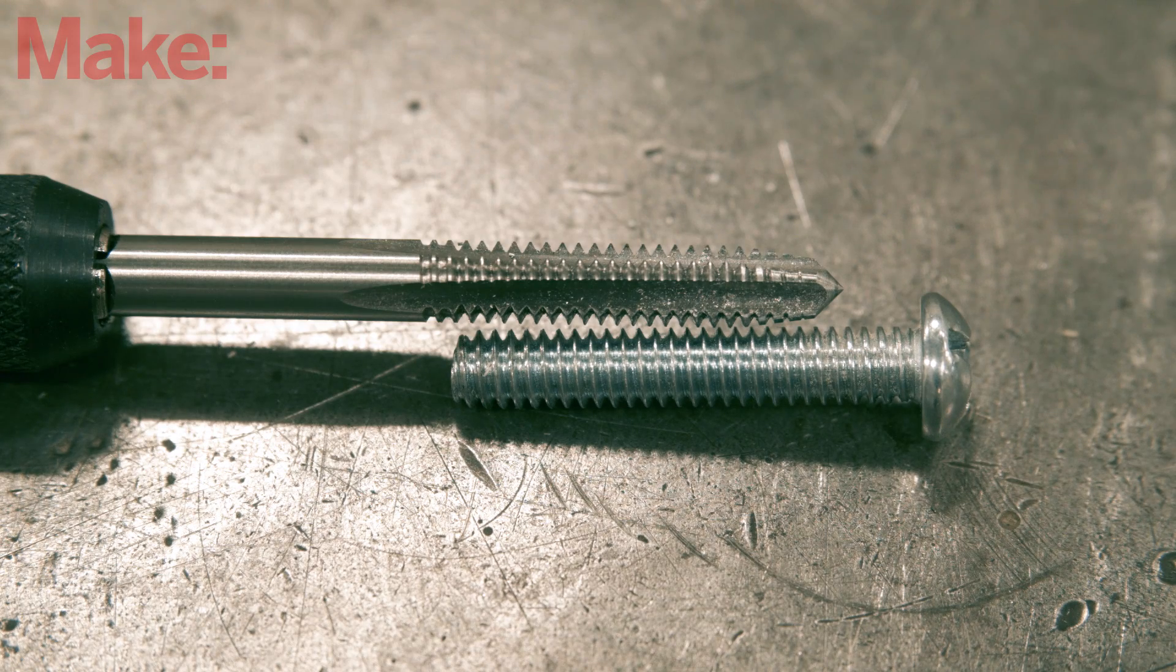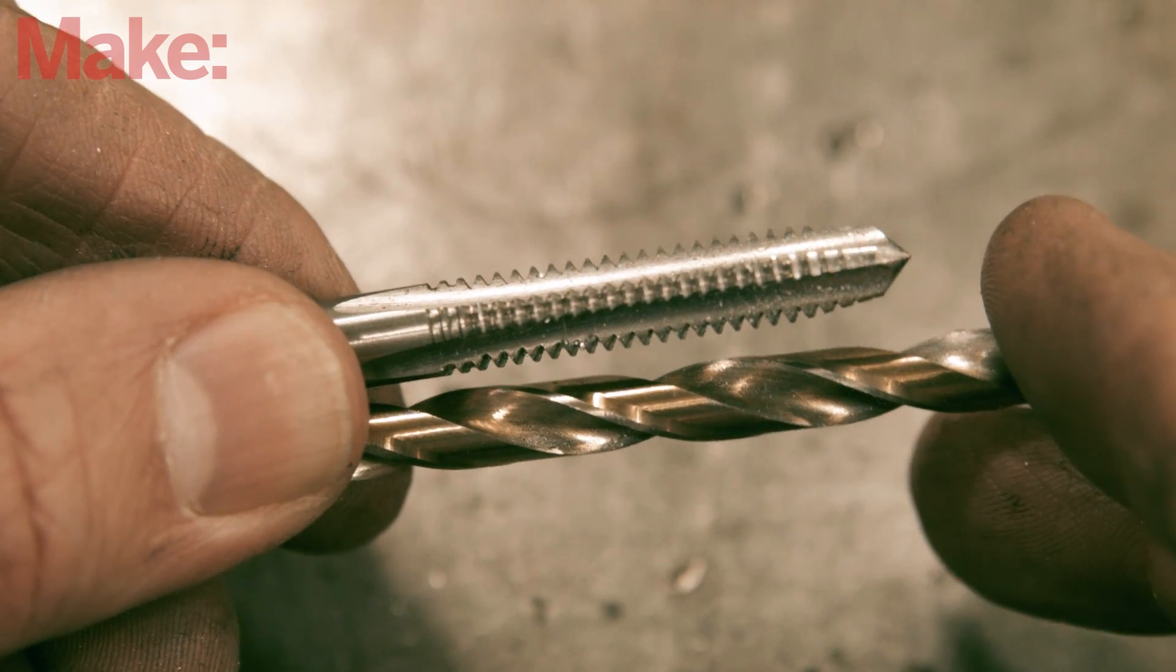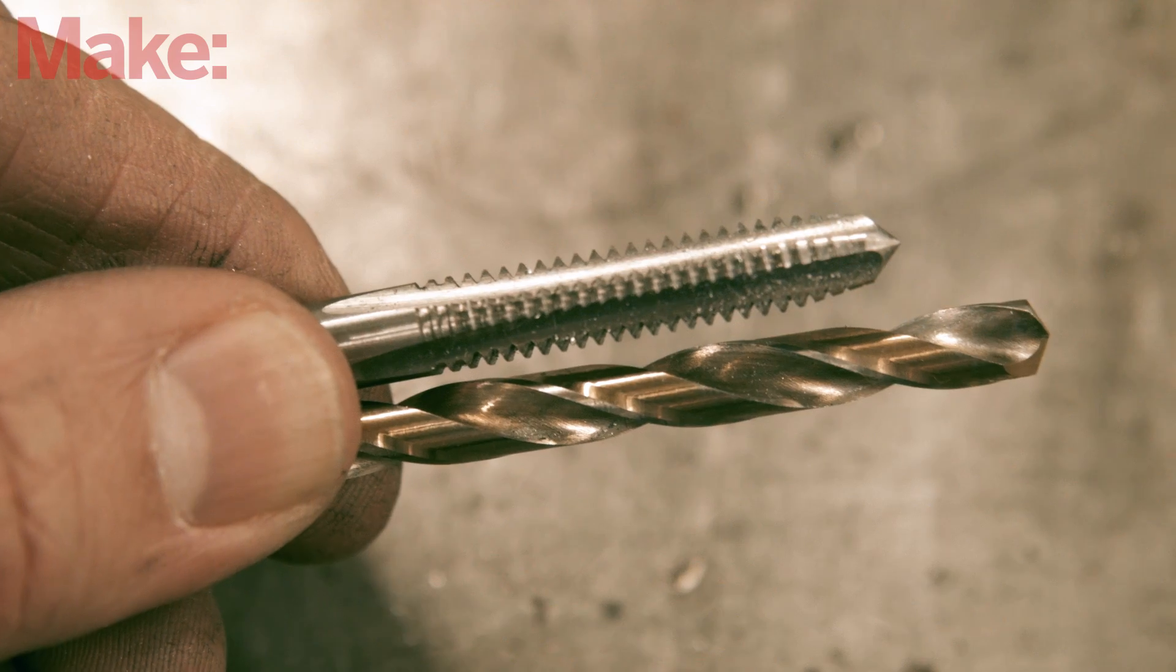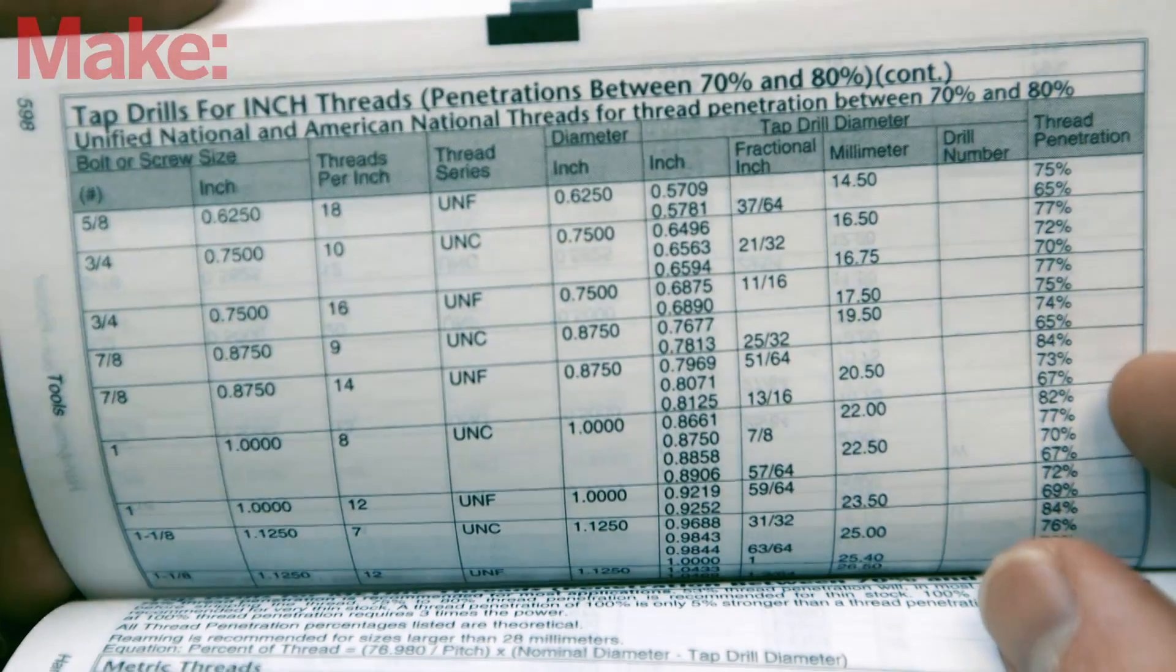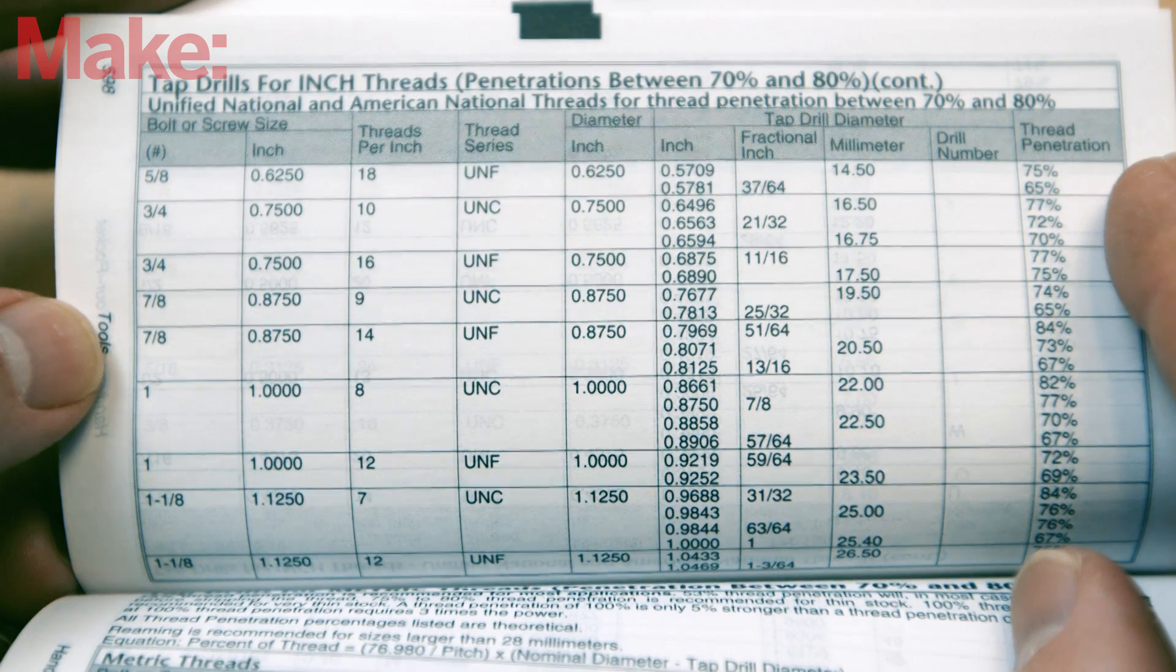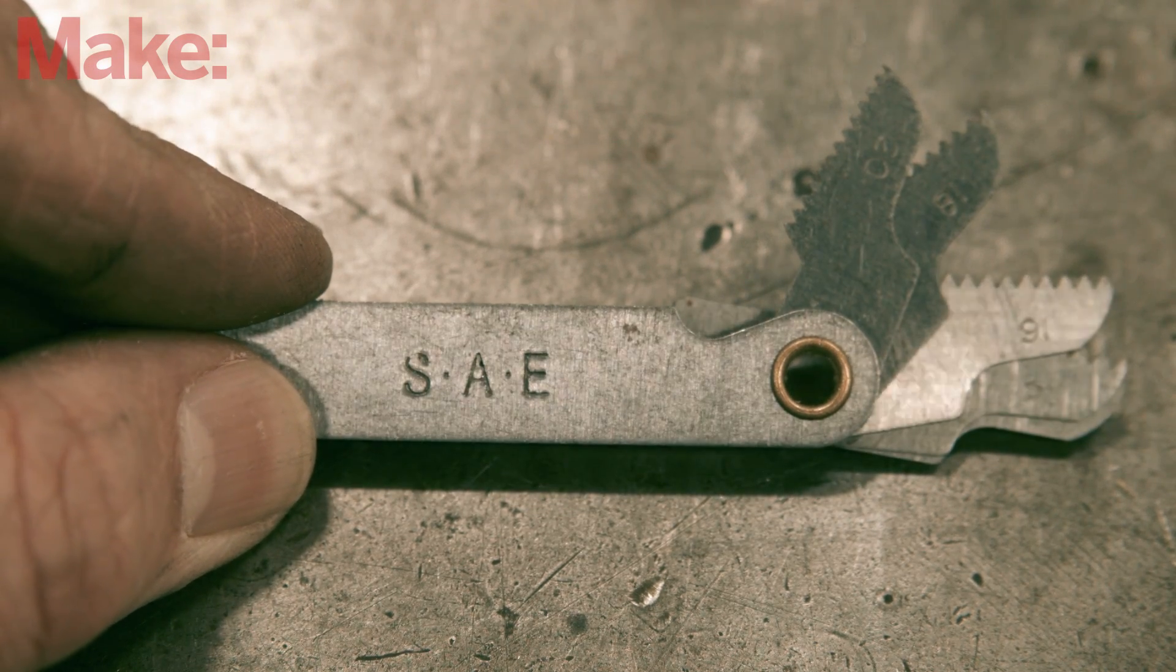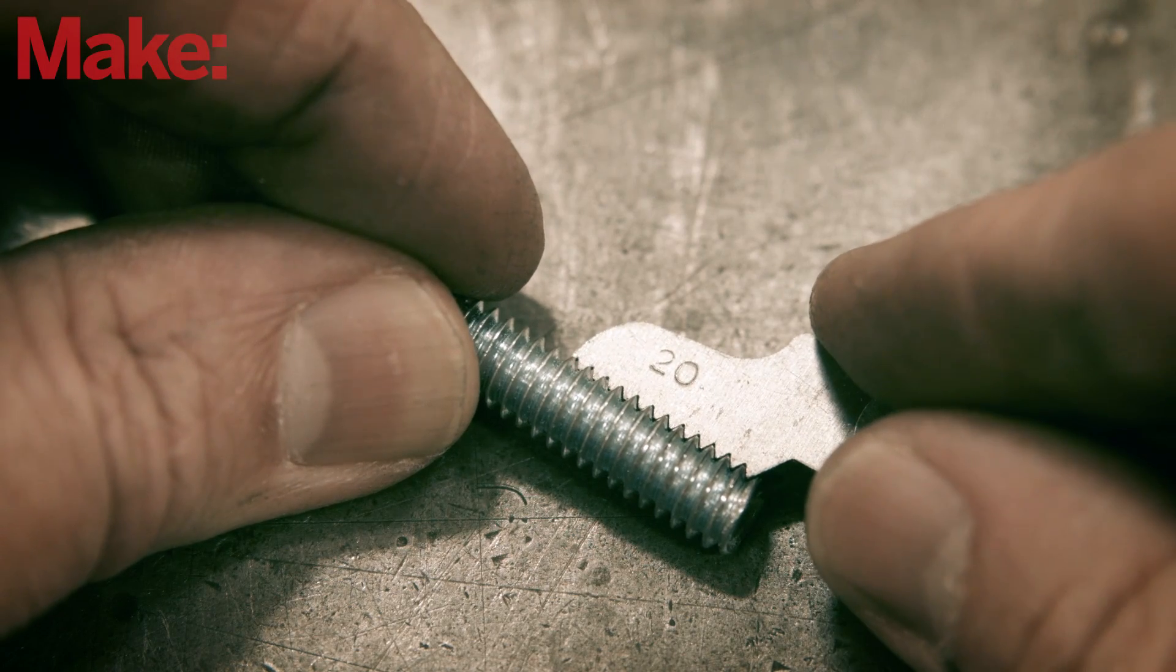For every bolt there's a corresponding tap with the matching diameter and number of threads per inch. Similarly, for each tap there is a corresponding drill bit size that you should use to drill the initial hole. These relationships are typically printed on the packaging for the tap or can be found through a quick internet search. If you're not sure what thread count a bolt is, you can use a screw pitch gauge to match one of its blades to the thread profile.